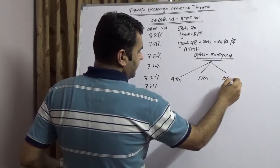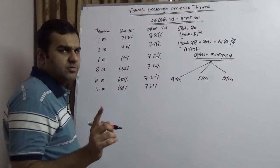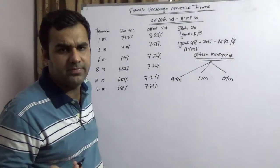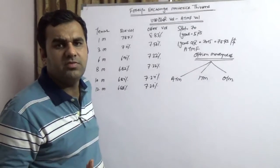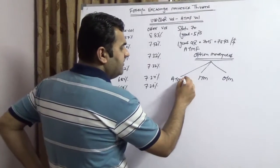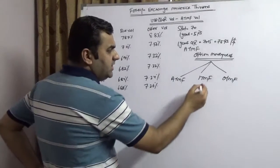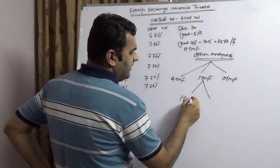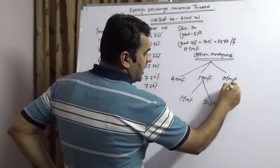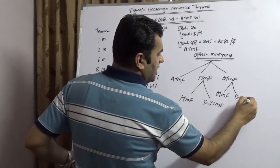Predominantly option moneyness is divided into three parts: one is known as at the money, in the money, and out of the money. I am saying option moneyness should be calculated on a forward basis: at the money forward, in the money forward, and out of the money forward. In the money forward is further divided into two parts: in the money forward and deep in the money forward. Out of the money forward will be divided into out of the money forward and deep out of the money forward.